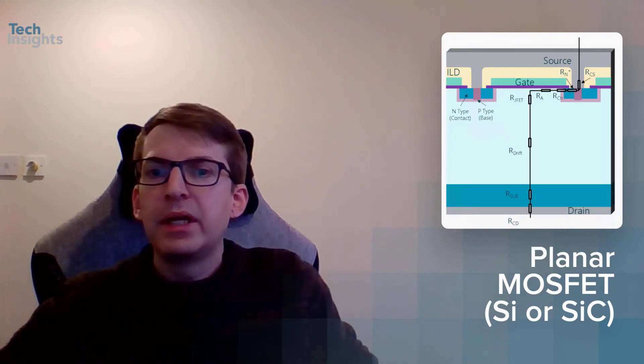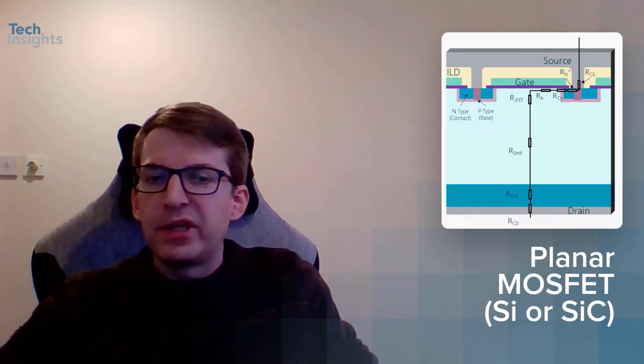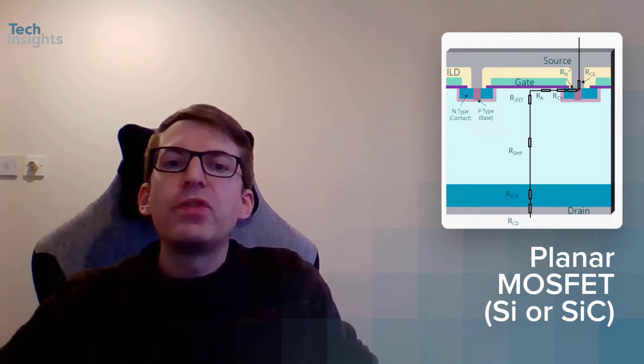We see illustrated here the components that make up on-resistance in a planar gate power MOSFET. The most substantial of these, generally speaking, are RCH, the channel resistance, and R-drift, the drift region resistance. Particularly in low voltage — around 650V silicon carbide MOSFETs — these are dominated by the channel resistance. But as we move up the voltage classes, the drift region becomes progressively thicker to block the associated voltage in the off-state, and R-drift begins to dominate.